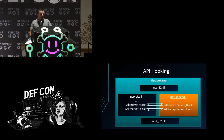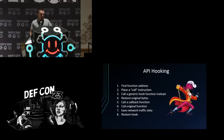API hooking. Using the same example with Outlook and encrypt.dll, we want to redirect SSL encrypt packet to our hooking function, redirecting from encrypt.dll to NetRipper.dll. The steps are: find the function address, which in some cases may be the difficult part; place a call instruction at the beginning of the function; call a generic hooking function instead; restore the original bytes; call a callback function that processes the data from our target function — in this case SSL encrypt packet — where we have the plain text data; save the data to a file; and then restore the hook for additional calls.